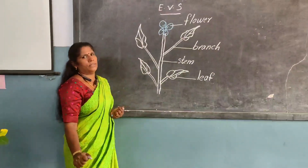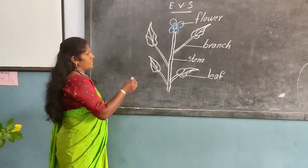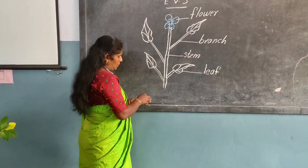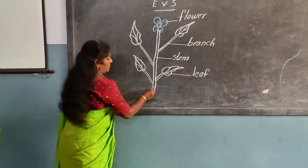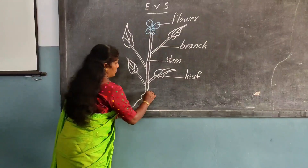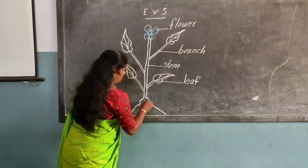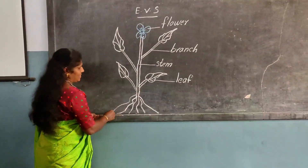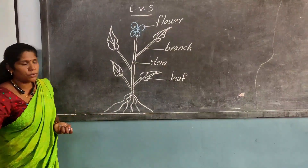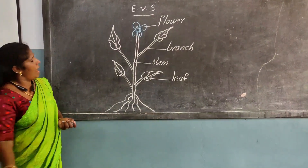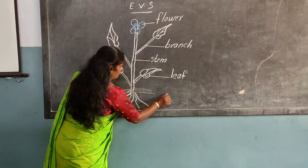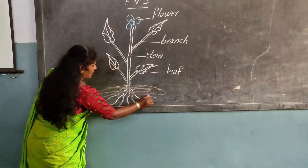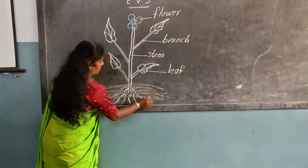Flower. The next part is root. Roots grow under the soil. You know, root grows under the soil.